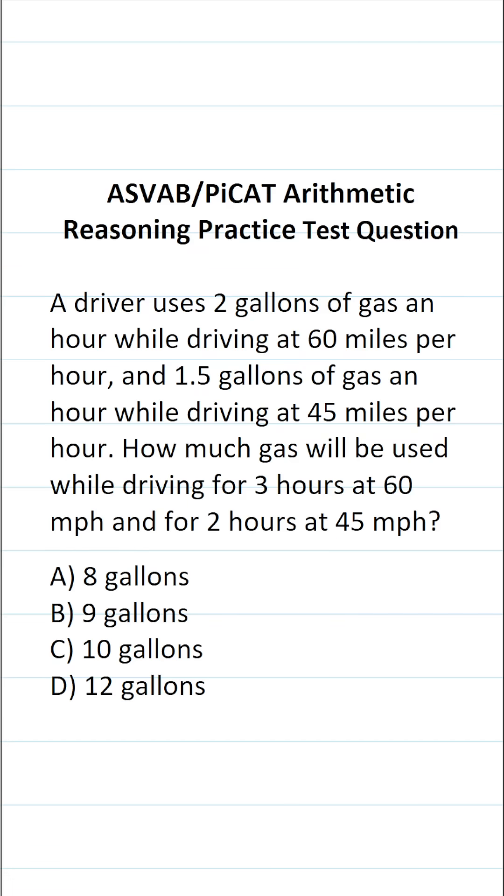This arithmetic reasoning practice test question for the ASVAB and PICAT says: A driver uses two gallons of gas an hour while driving at 60 miles per hour and 1.5 gallons of gas an hour while driving at 45 miles per hour.